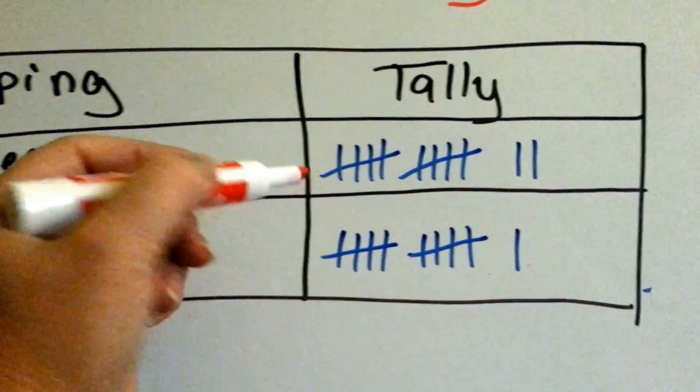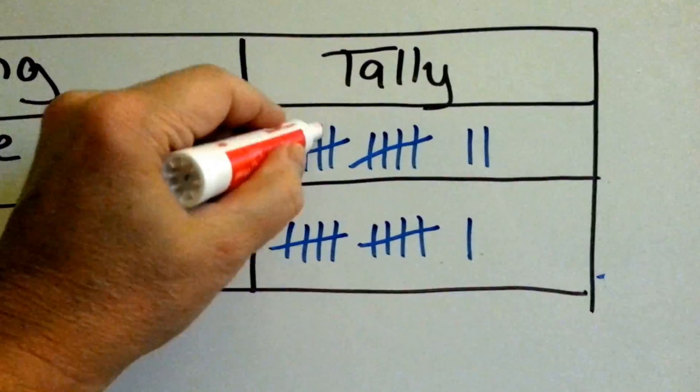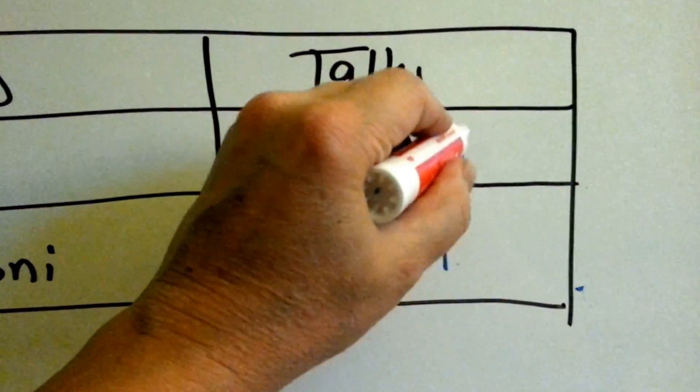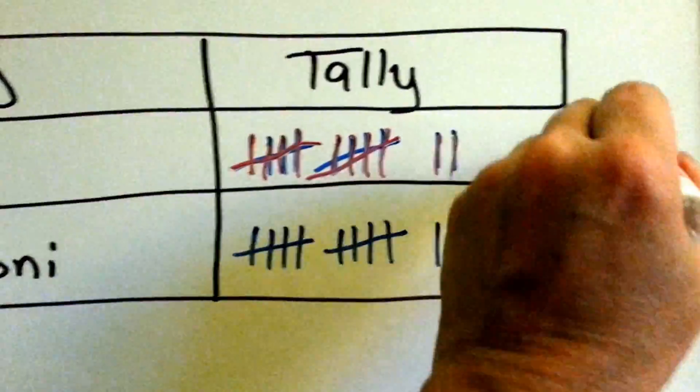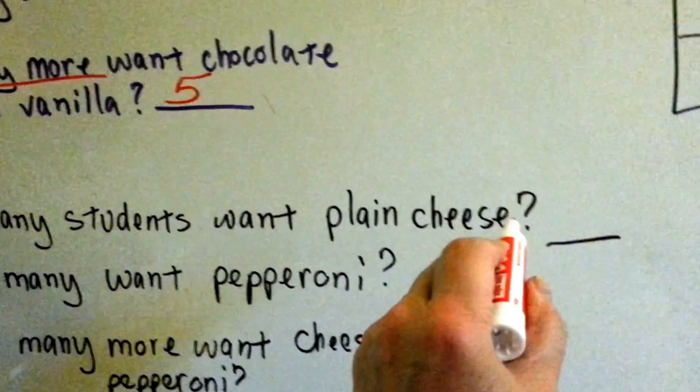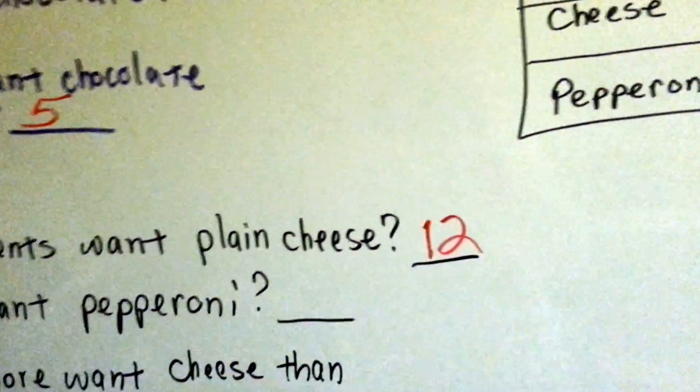She counts the hands that are raised and she counts 1, 2, 3, 4, 5, 6, 7, 8, 9, 10, 11, 12. 12 children want plain cheese pizza. How many students want plain cheese? 12.